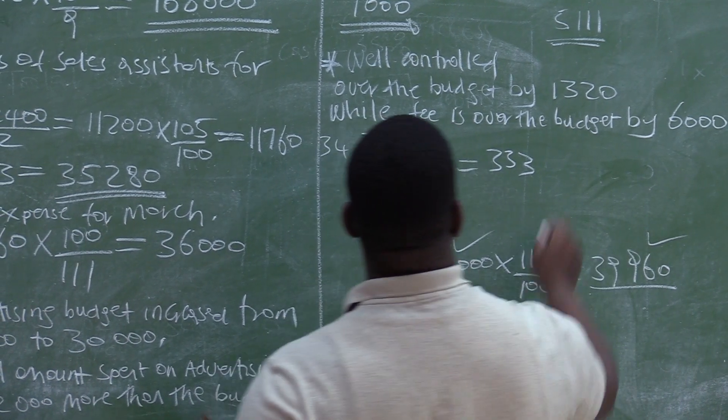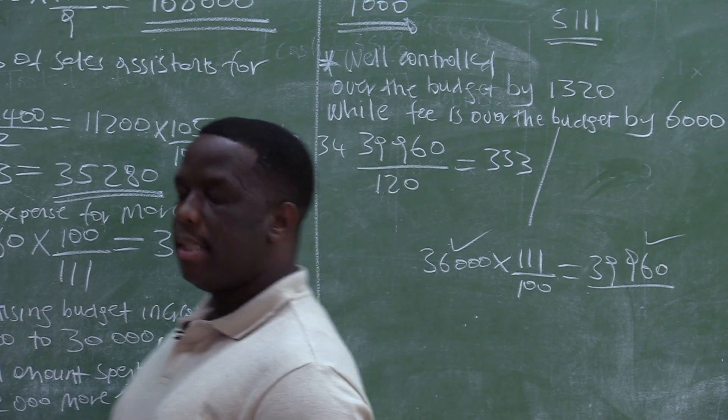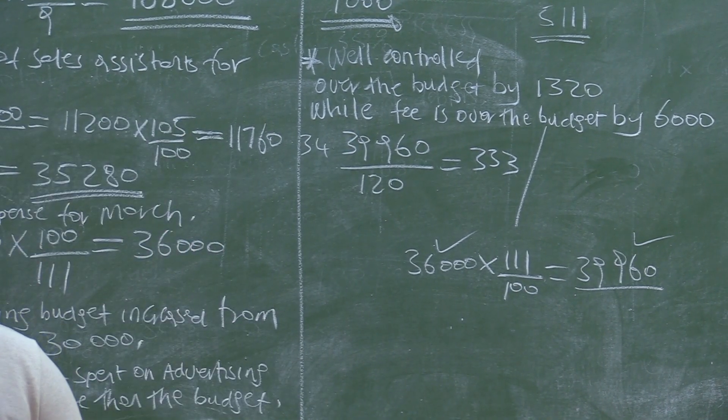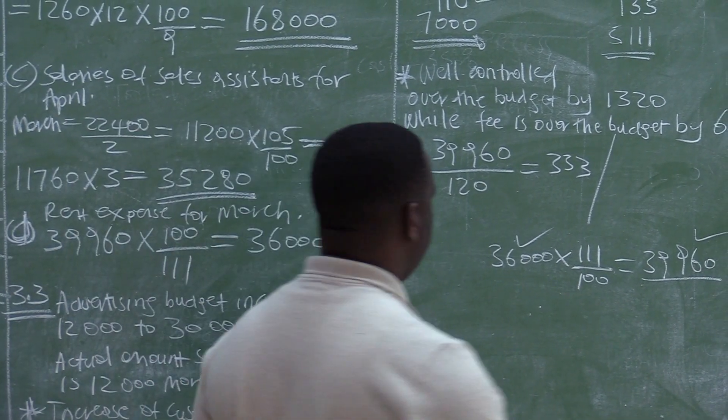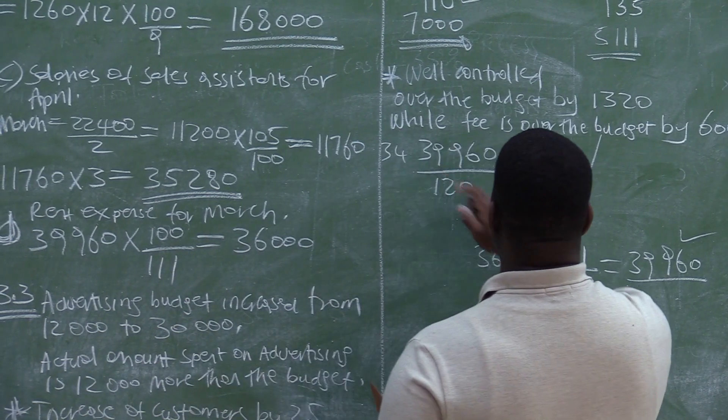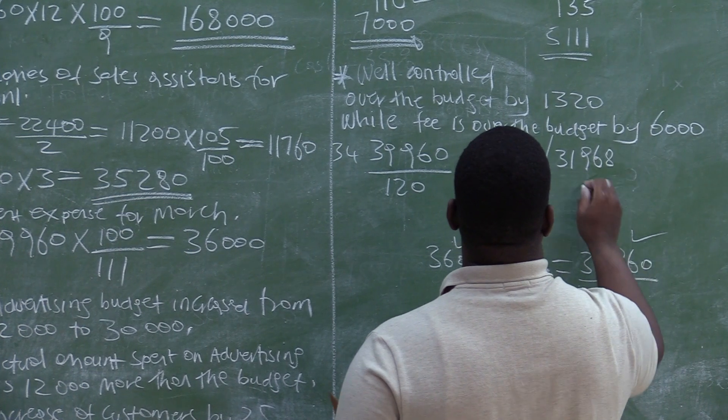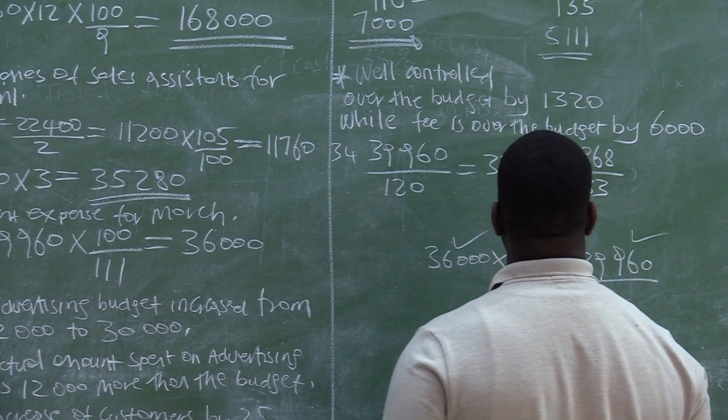So if now we look at the amount paid, the actual amount that we paid for rent, it is now the actual amount is $31,968. When we had budgeted $31,968. And if you divide this by this amount, which is $333 per square meter,